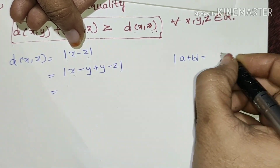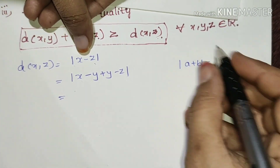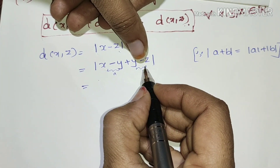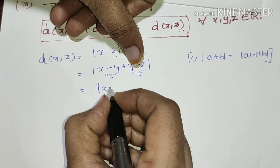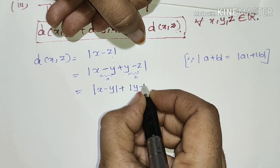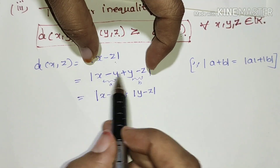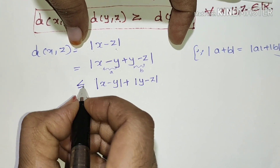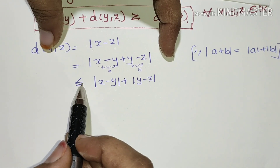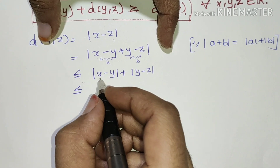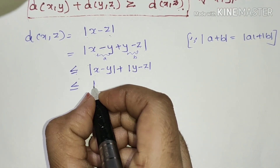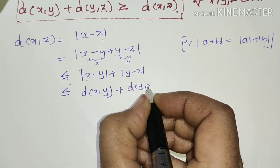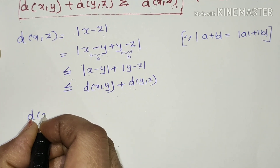Using the modulus property — modulus of a plus b is less than or equal to modulus of a plus modulus of b — we set a equal to x minus y and b equal to y minus z. So modulus of x minus z is less than or equal to modulus of x minus y plus modulus of y minus z, which equals distance of x, y plus distance of y, z.